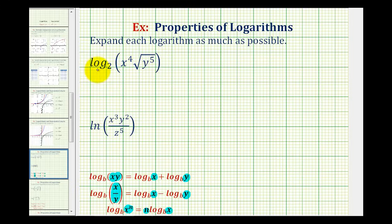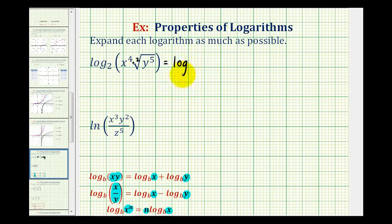So if we want to expand log base two of x to the fourth times the square root of y to the fifth, we need to recognize this first as a product. But before we do this, we want to rewrite the square root of y to the fifth in exponent form. Since we have a square root where the index is two, we can rewrite this as log base two of x to the fourth times y to the five halves.